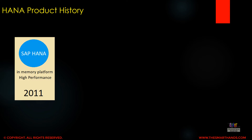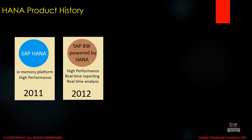Now we'll talk about the HANA product history specifically. In 2011 SAP launched HANA as an in-memory platform database with high performance. In 2012 SAP launched SAP BW powered by HANA, which was a high-performance system.